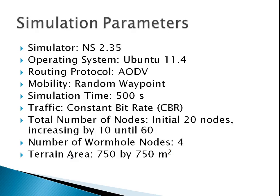What were the parameters we used? We ran our simulation on NS version 2.35, on Ubuntu version 11.4. We used AODV — ad hoc on-demand distance vector protocol — where routes are used only when they have to be used. We ran the simulation with random waypoint mobility, set the simulation time to 500 seconds, and used constant bit rate traffic. Initially we had 20 nodes, then increased by 10 until we reached 60 nodes, collecting results each time and averaging them. We then ran the simulation without wormhole nodes, and later introduced four wormhole nodes tunneling data from one point to the other. Our terrain was 750 by 750 meters squared.